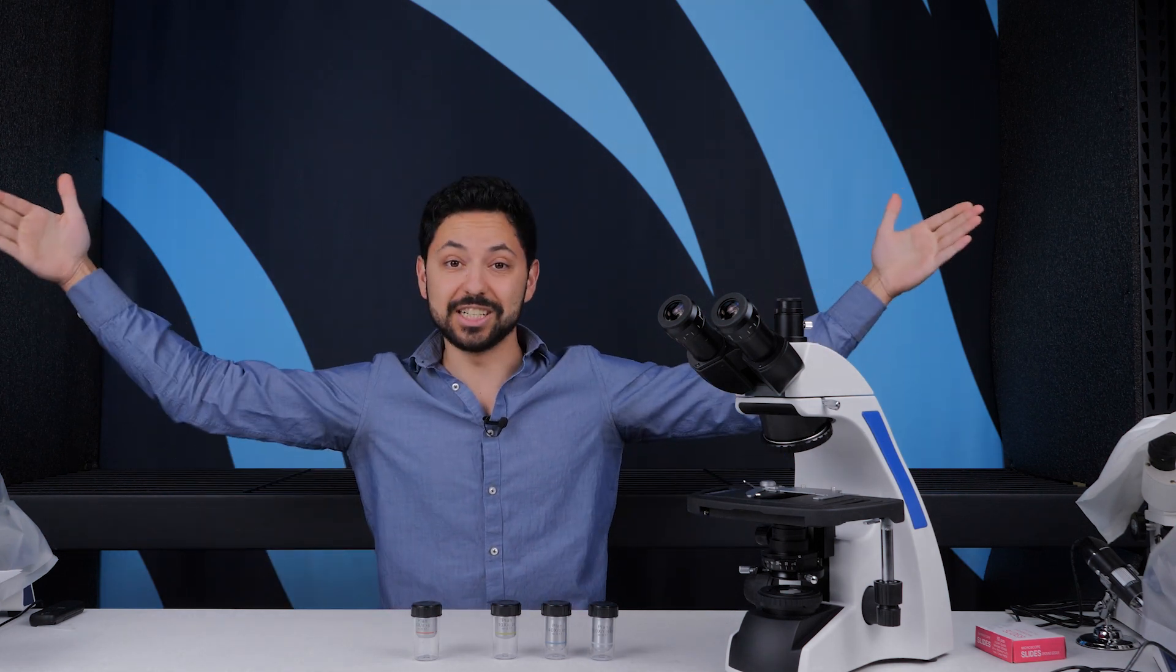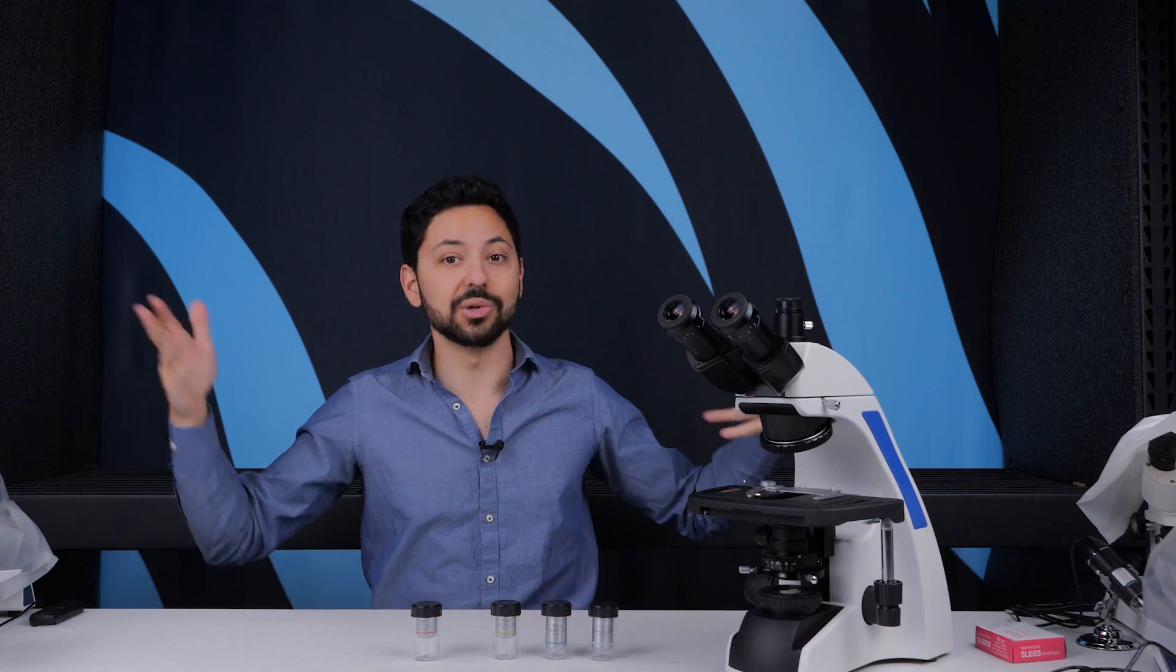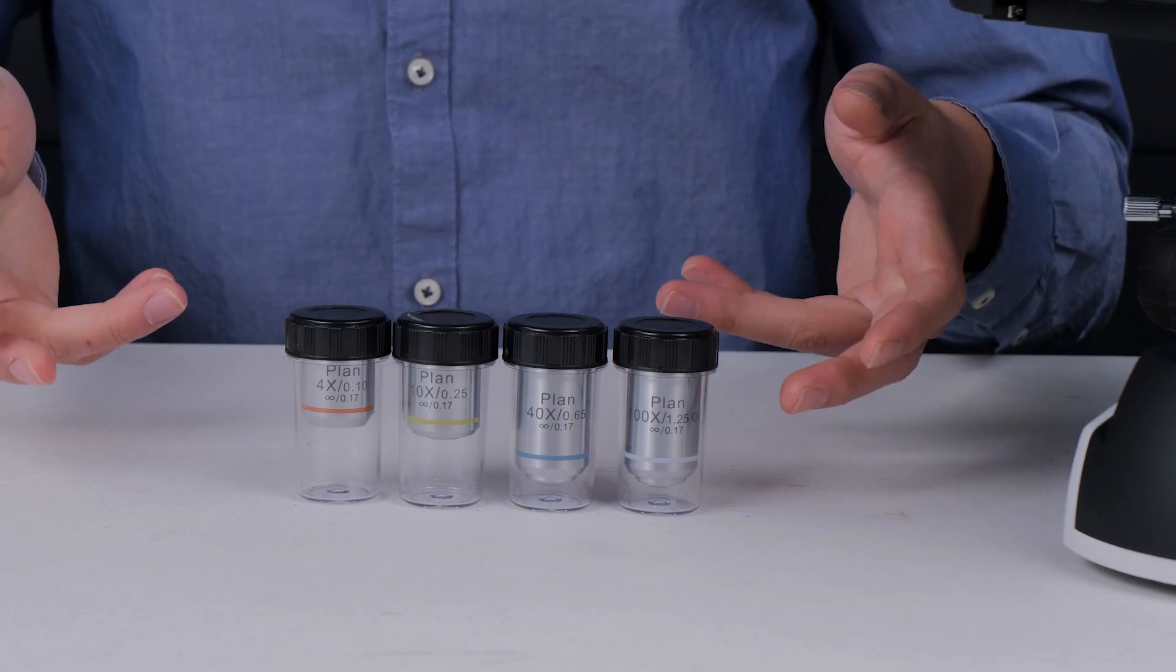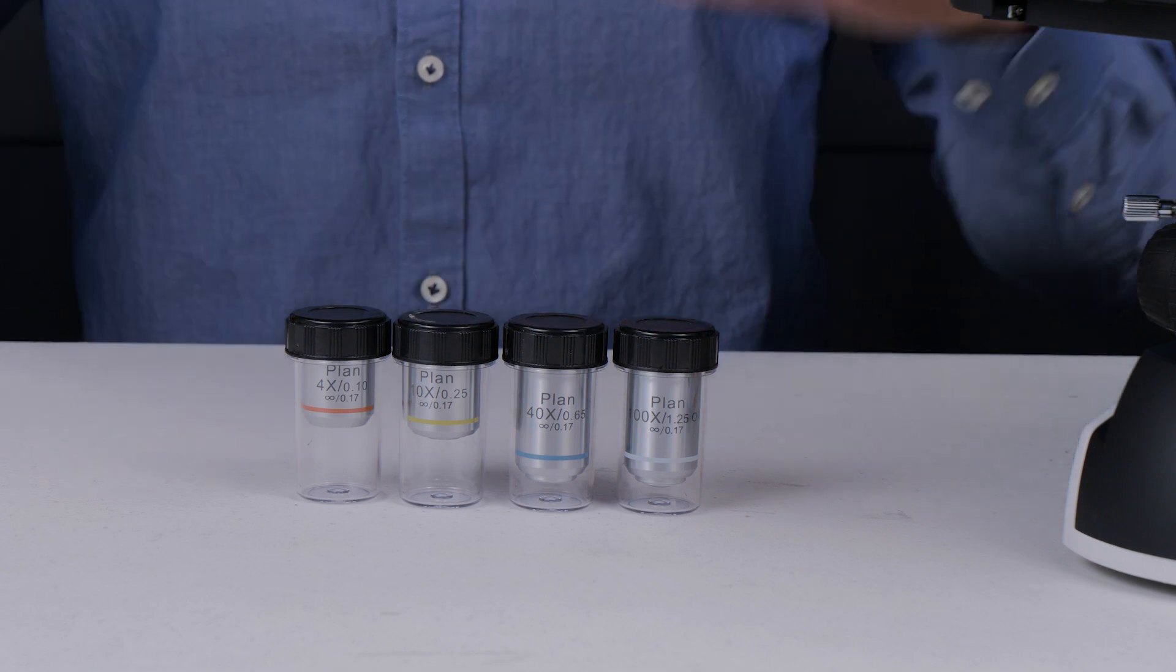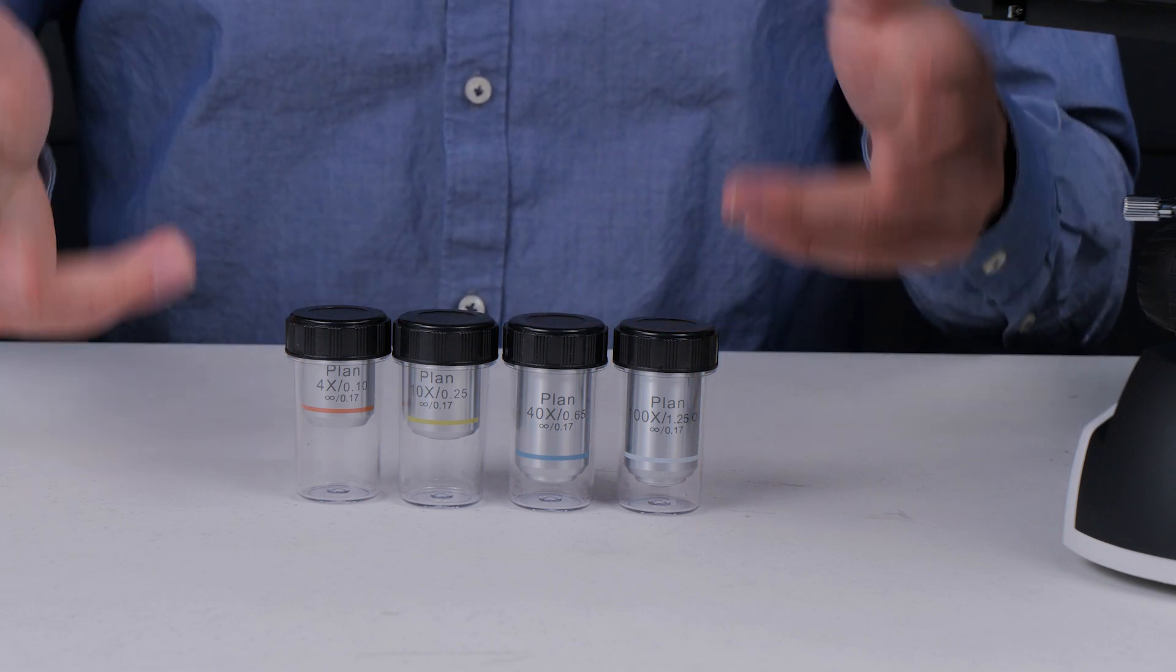If you wanted to see more detail out of that really big TV, you'd have to upgrade the resolution to an 8K display. And it's the exact same thing with magnification and numerical aperture. Magnification is how big the TV is and numerical aperture is what the resolution of the TV is.